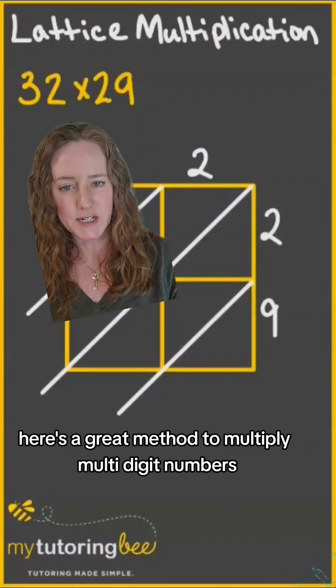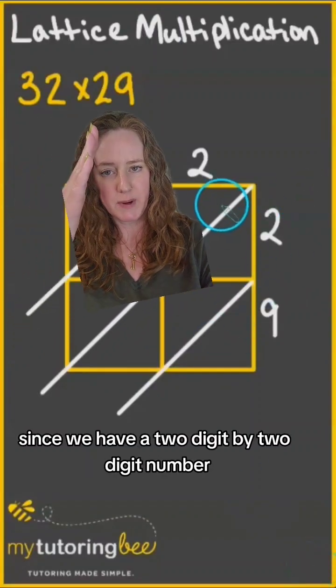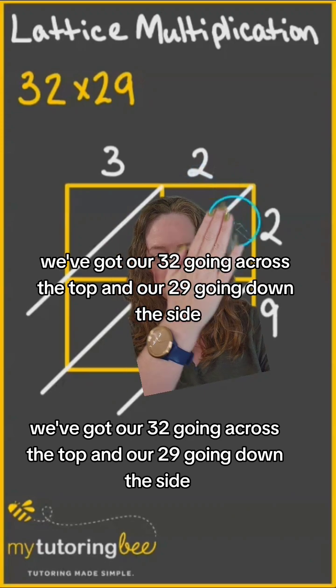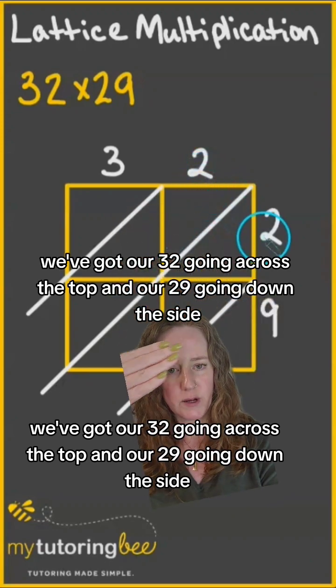Here's a great method to multiply multi-digit numbers. Since we have a two-digit by two-digit number, we've got our 32 going across the top and our 29 going down the side.